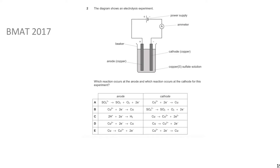The electrolyte here is copper sulfate, which gives copper ions and sulfate ions. Importantly, this is an aqueous solution, meaning it's dissolved in water. Water can partially split into hydrogen ions (H+) and hydroxide ions (OH-). So in addition to copper and sulfate ions, we also have hydroxide ions and hydrogen ions present.